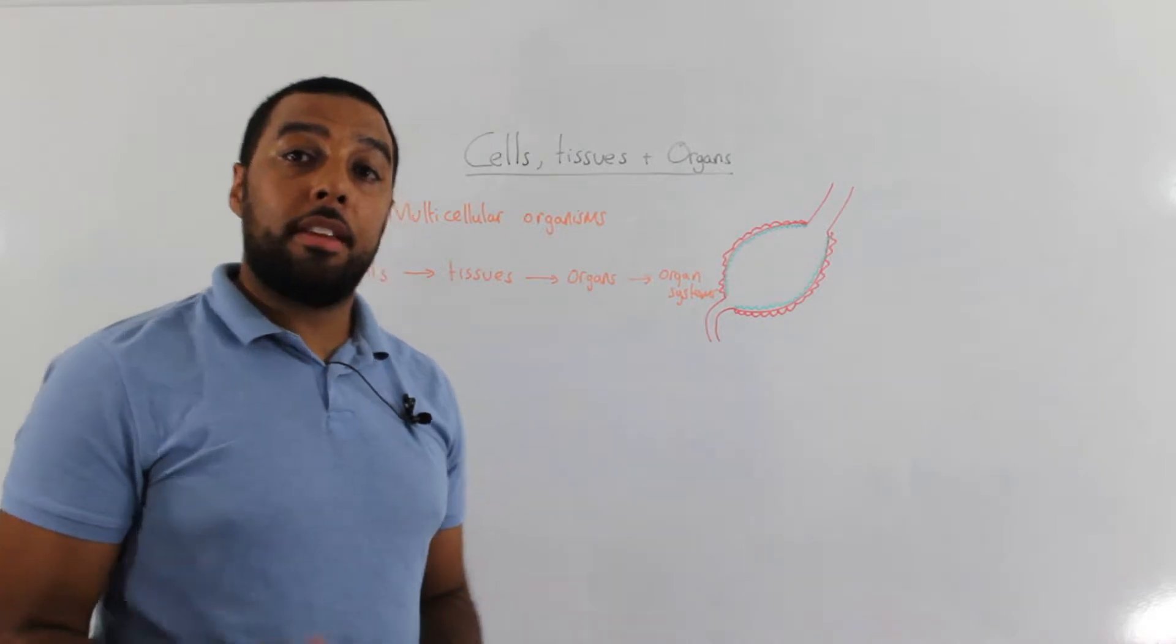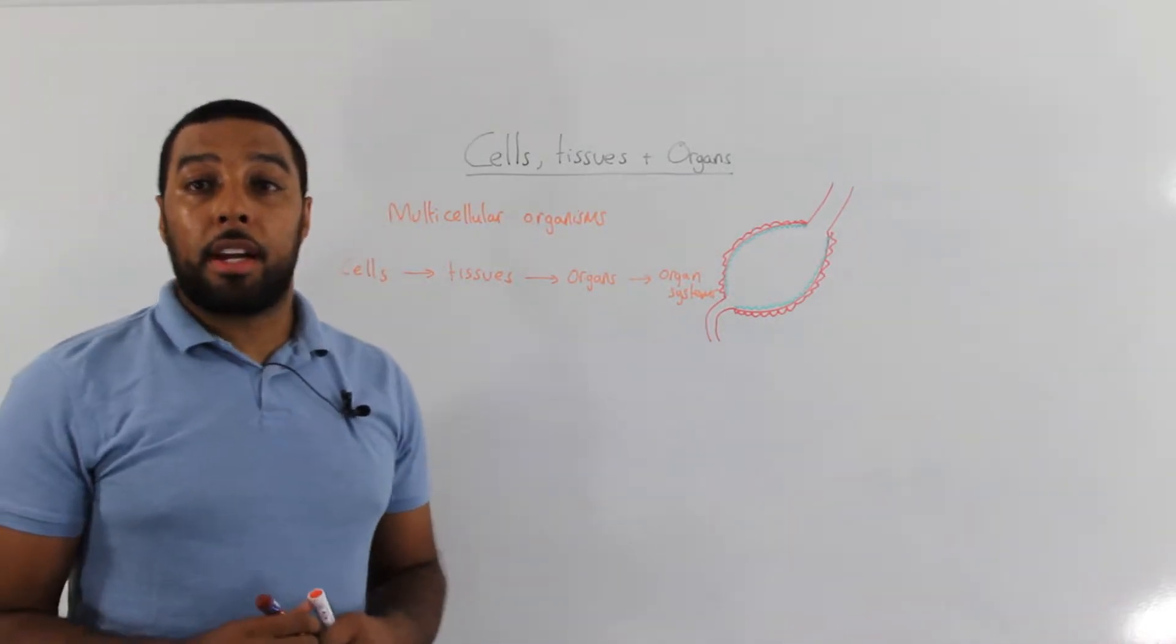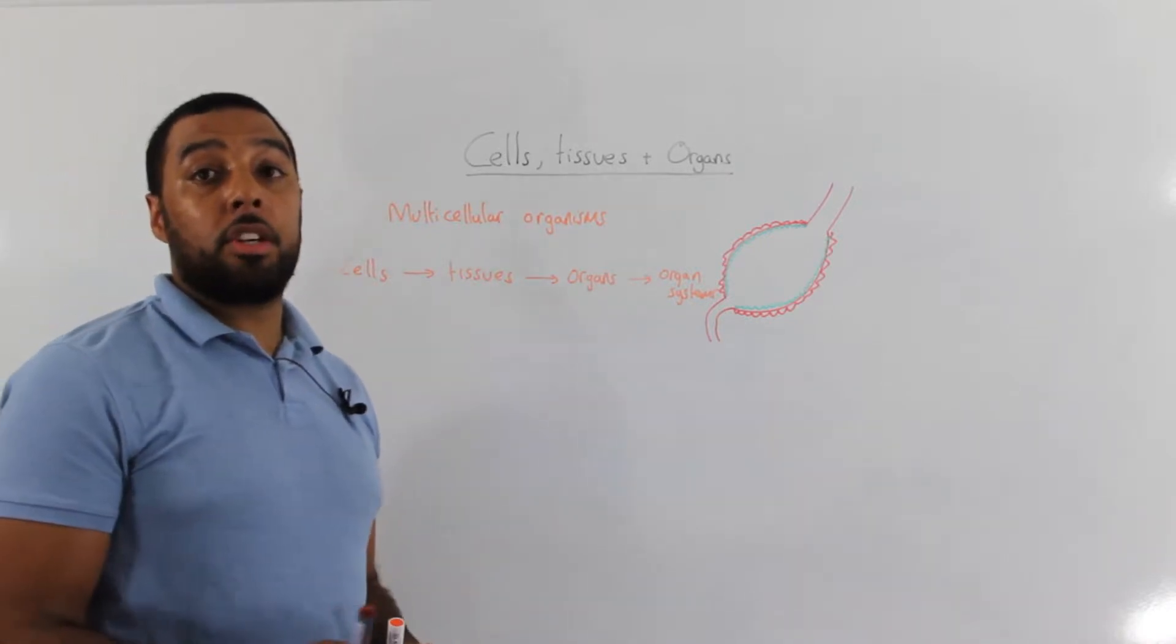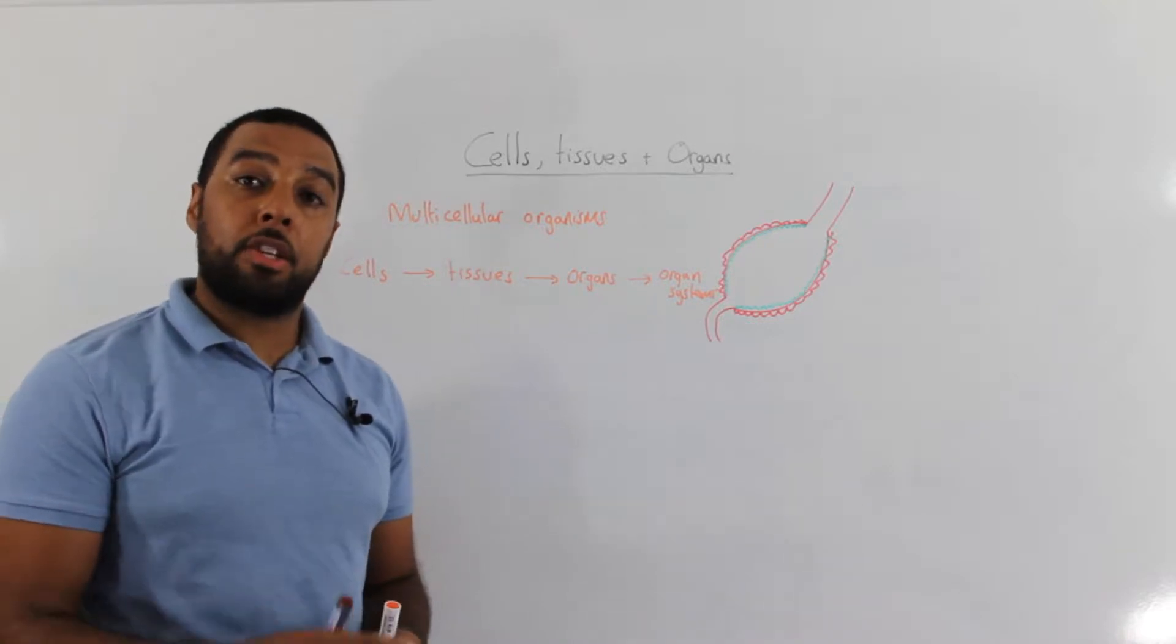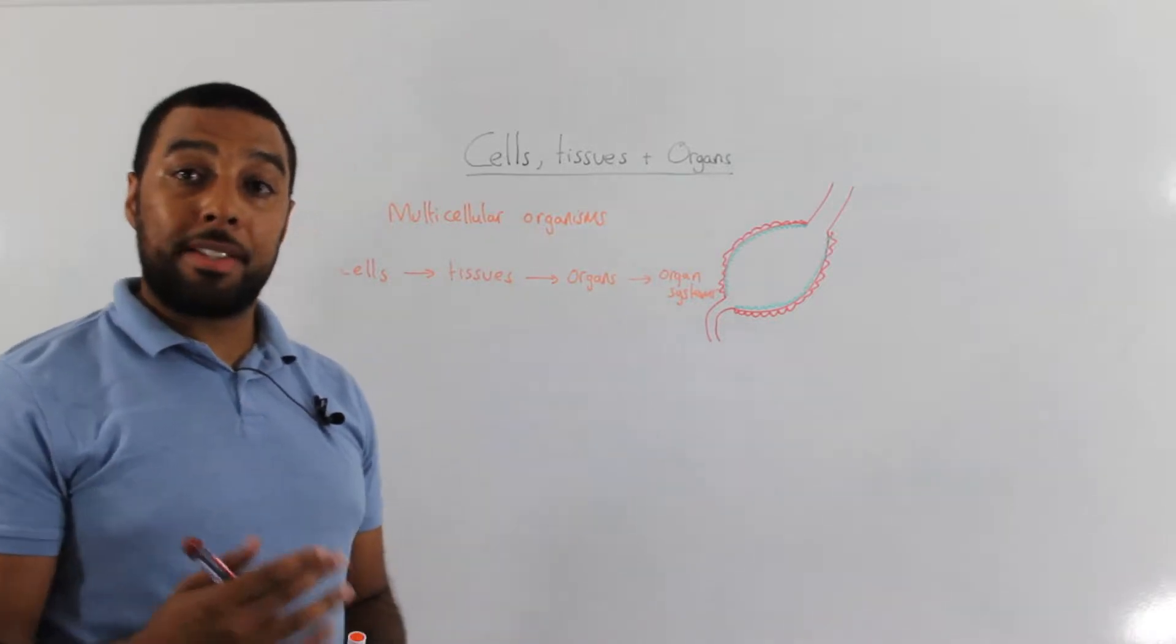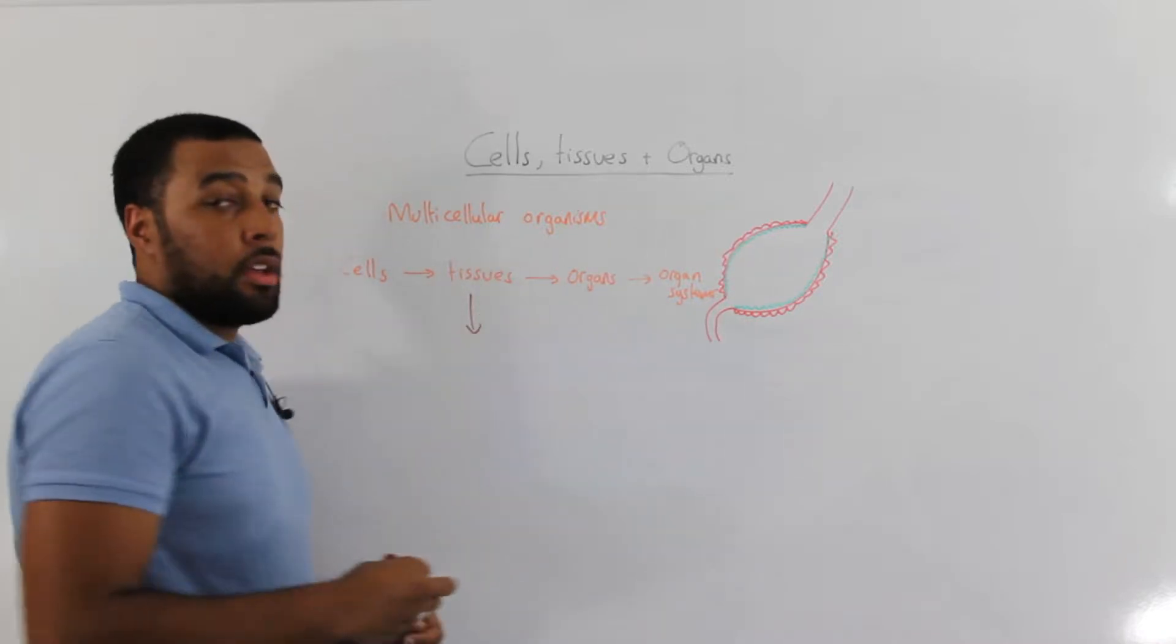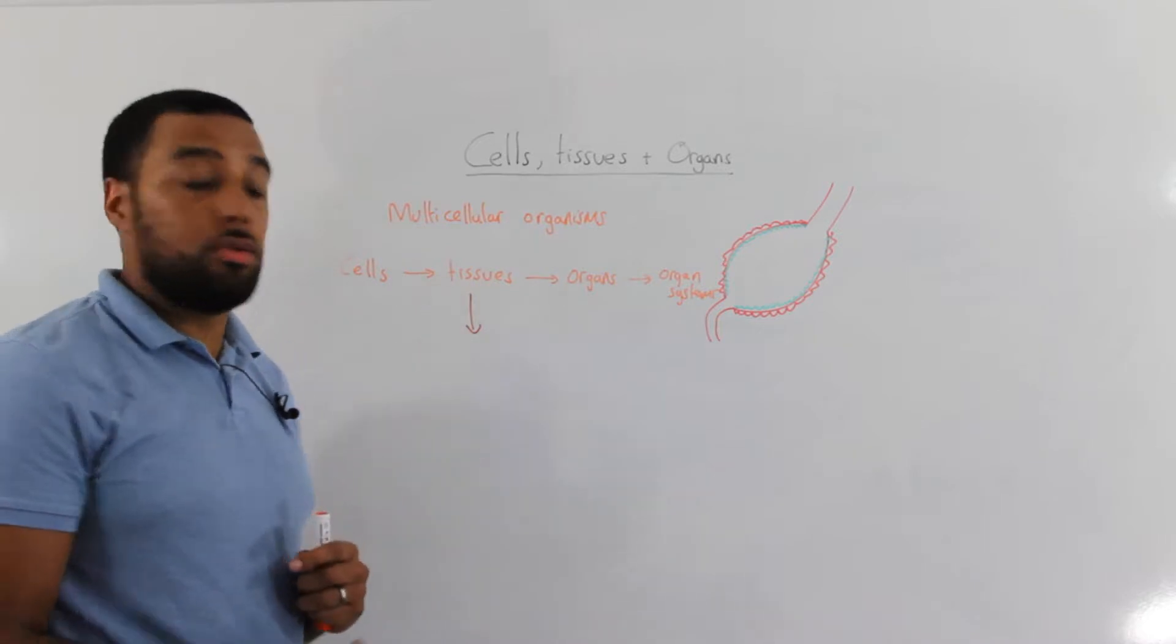Well let's take a look at the relationship then between these levels of organisation. We know that cells become specialised quite early on in their formation and they become specialised to carry out a specific job. A group of similar cells that carry out the same job are called tissues.